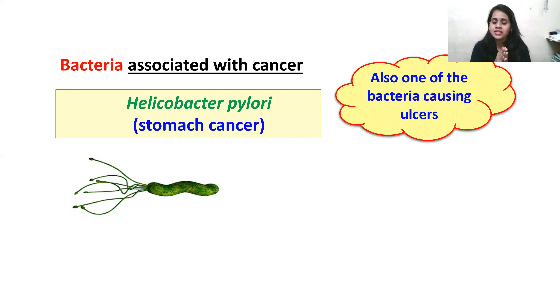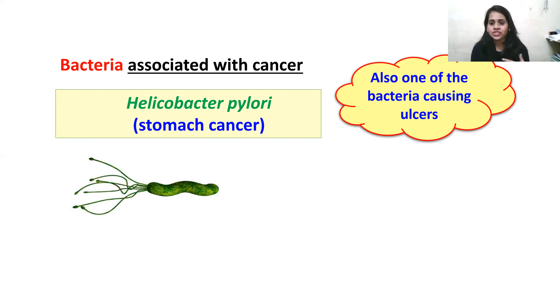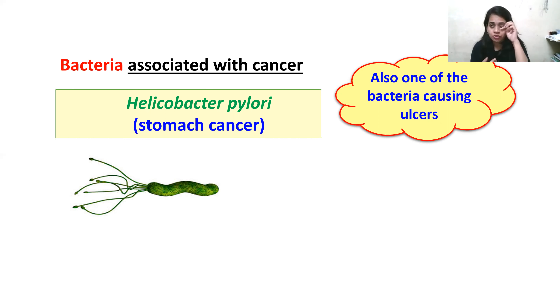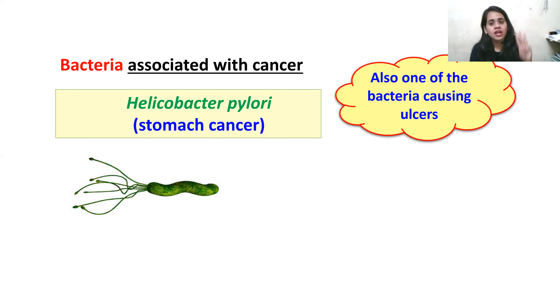To summarize: a normal cell undergoes multiple mutations in its DNA and changes into a cancerous cell. The things that cause these mutations are called carcinogens — there are physical carcinogens, chemical carcinogens, and viral and bacterial carcinogens, which are together called biological carcinogens.